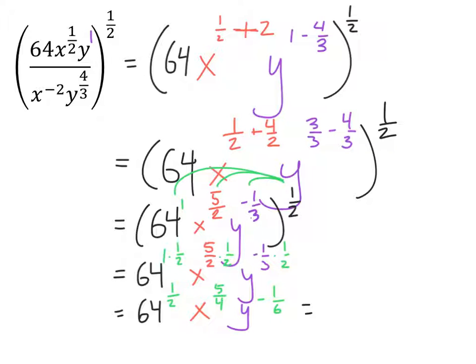We know 64 to the power of 1 half would give us 8, where the square root of 64 is 8. And then we have x to the power of 5 fourths. But one thing we're going to want to do to simplify this is get rid of that negative exponent. To do that, we'll just reciprocate y with what really would be y over 1. And reciprocating that, we can ignore the 1, but now that y is in the denominator.